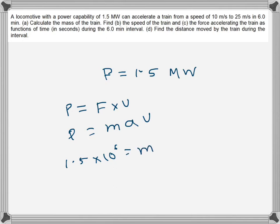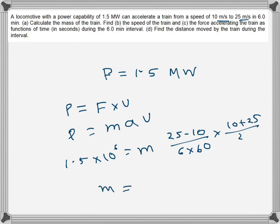We can find acceleration because the train's speed changed from 10 meters per second to 25 meters per second in 6 minutes, so the acceleration is (25 − 10) / (6 × 60). For velocity, we use the average velocity, which is (10 + 25) / 2 = 17.5 meters per second.